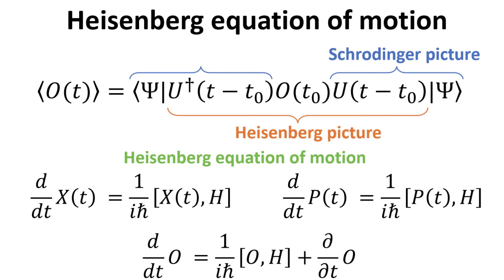There are three most commonly used pictures in quantum mechanics. First is the Schrödinger picture, which we introduced in a previous video. In this video we shall discuss the Heisenberg picture, a formulation largely due to Werner Heisenberg.